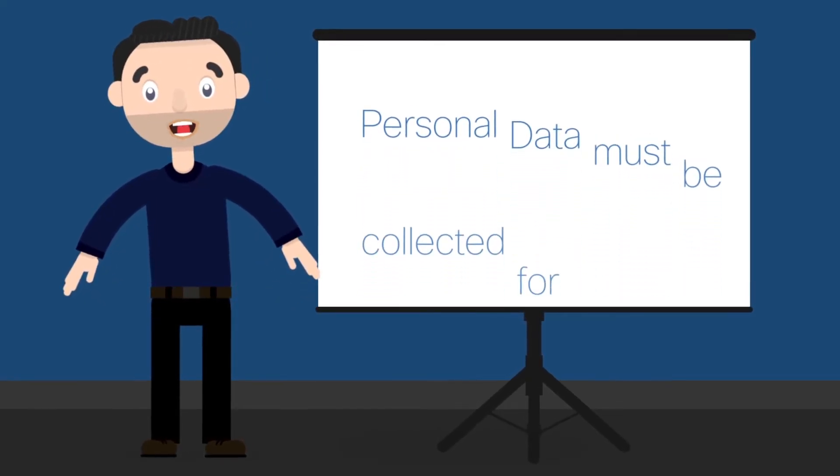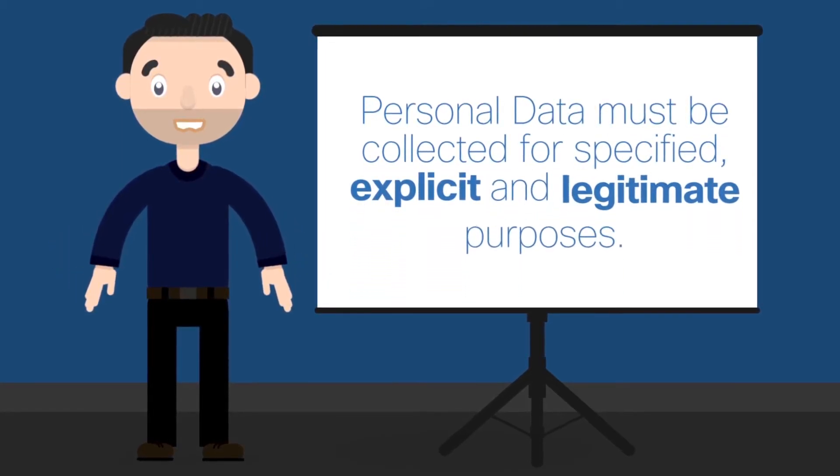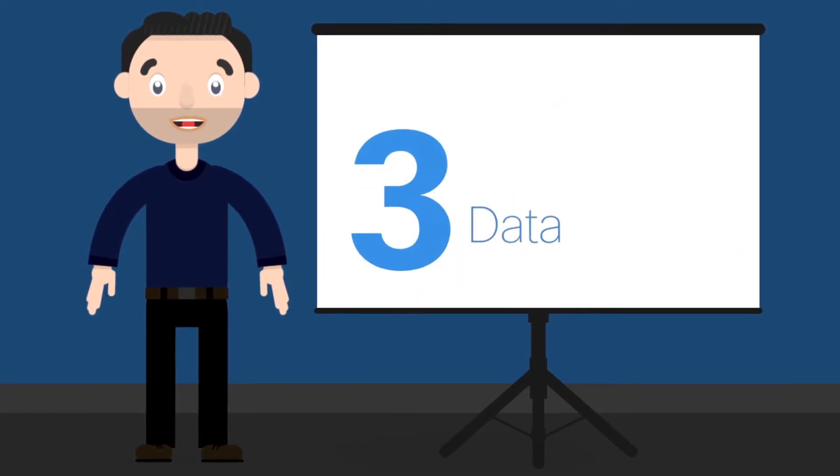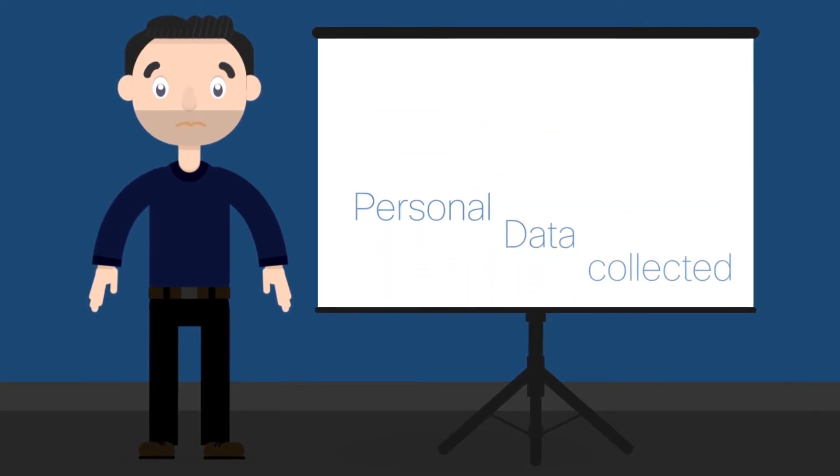Purpose limitation: here personal data must be collected for specified, explicit, and legitimate purposes. Data minimization: so any personal data collected must be adequate, relevant, and limited to the purposes for which it is being processed.